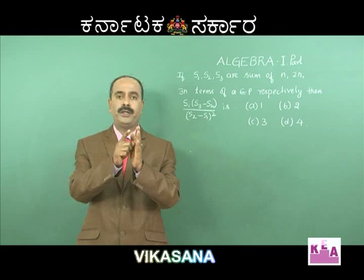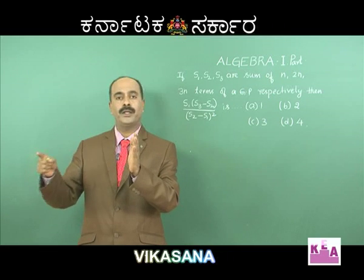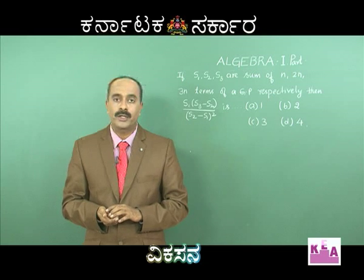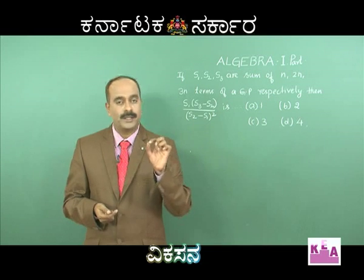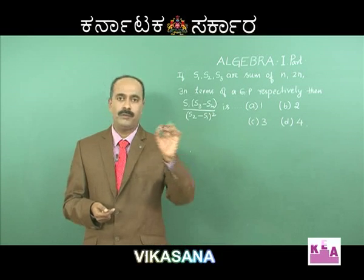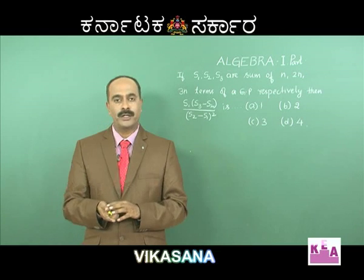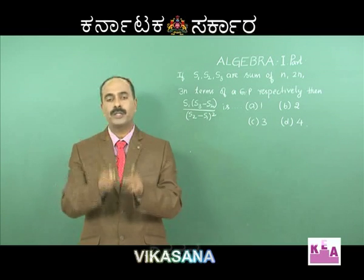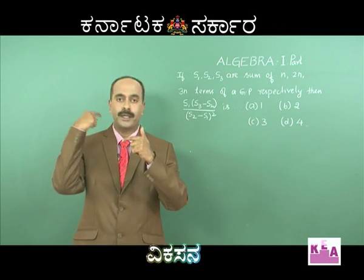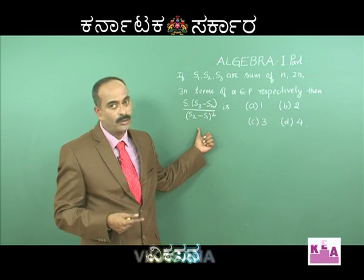Geometric progression: A plus AR plus AR square up to AR to the power of N minus 1. S1 is the sum of the first N numbers, S2N, S3N — so that's why we equationally substitute and you can solve it.